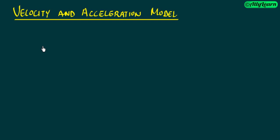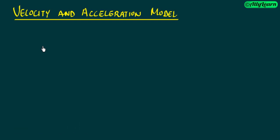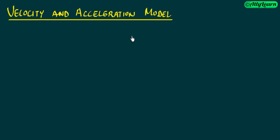Basically, velocity and acceleration are related to the motion of a particle. We will see if a particle moves in horizontal direction or vertical direction, then the velocity and acceleration model can be made. So we will start with a basic model, then go to the advanced version and increase complexity. What is velocity and acceleration - this is what you all know. So let's start the model.